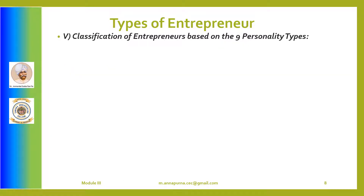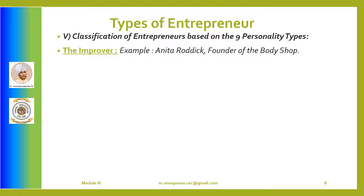The next group of entrepreneurs are classified based on nine personality types: the Improver, the Advisor, the Superstar, the Artist, the Visionary, the Analyst, the Fireball, the Hero, and the Healer. Improvers are focused on using their company as a means to improve the world. Their motto is that morally correct companies will be rewarded while working on a noble cause. Improvers have an unwavering ability to run their business with high integrity and ethics. They are perfectionists and can be overly critical of employees and customers. Anita Roddick, founder of Body Shop, is one such example.